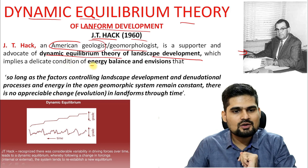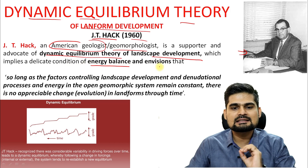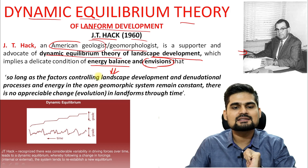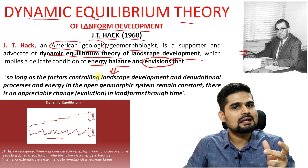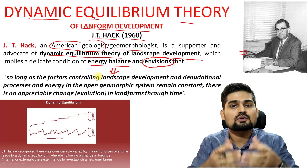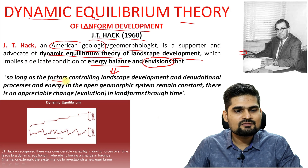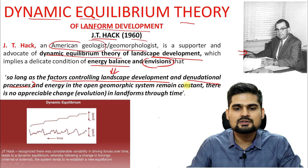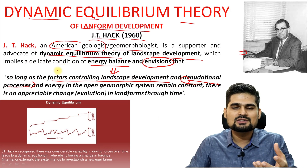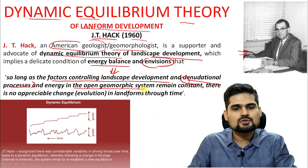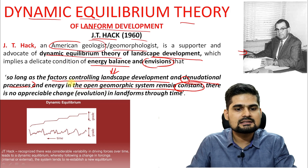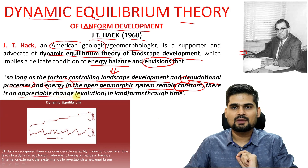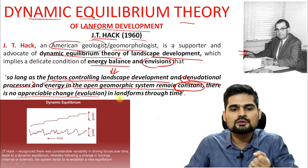The two important concepts are: one is called energy balance, and the second is what that energy balance envisions. You can read the statement of J.T. Hack here. So long as the factors controlling landscape development and denudational processes — remember, denudational processes include weathering, erosion, and mass wasting — and the energy in the open geomorphic system remains constant, there is no appreciable change, meaning no evolution in landforms through time.